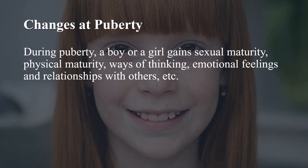Now let us understand the changes at puberty. During puberty, a boy or a girl gains sexual maturity, physical maturity, changes in way of thinking, emotional feelings, and relationships with others. These changes occur at puberty — usually at the age of 11 to 12 years in females and 14 to 15 years in males. All these changes are brought about by hormones in the body.